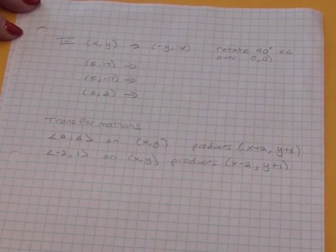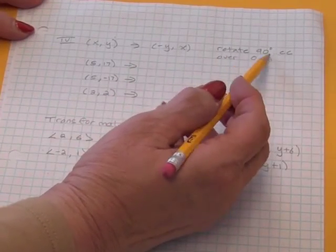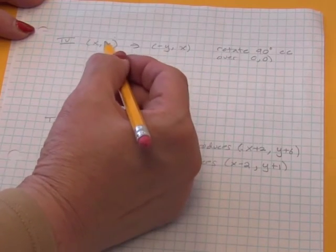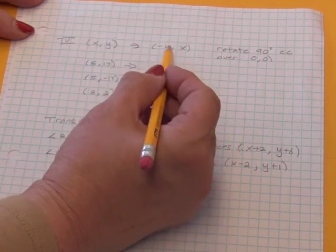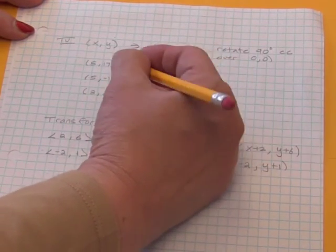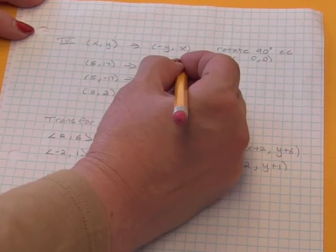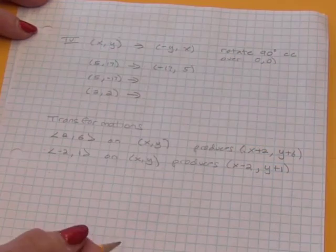Okay, finally, I'll just review these ideas one more time for a rotation of 90 degrees counterclockwise. Here we are switching the x and the y, and then taking the new x value and multiplying it by negative 1. So, I'm switching 17 and 5, and I'm taking the new x value and multiplying it by negative 1.